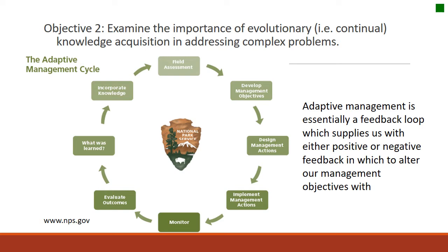Here is a second version of the adaptive management loop — the one used by the National Park Service. We start with field assessment, developing objectives, implementing actions, monitoring, evaluating, and learning and incorporating knowledge. This all goes back into our assessment and development of management objectives. Another way to think about adaptive management is that it's essentially a feedback loop, which supplies us as land managers with either positive or negative feedback with which to alter our management objectives.